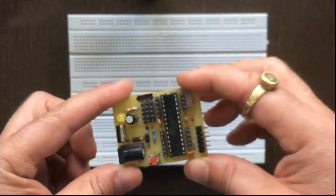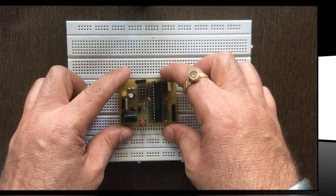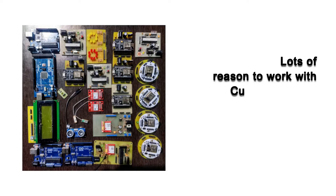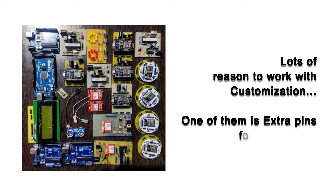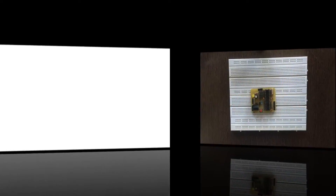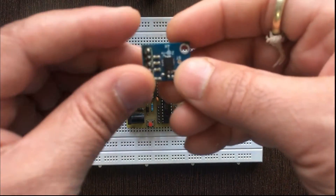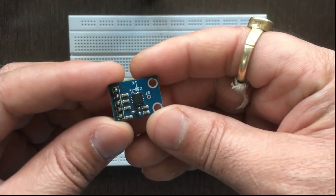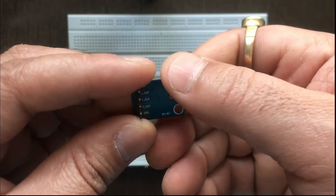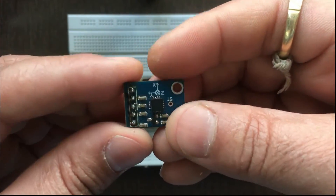I always use a customized board for projects because our customized board has lots of 5V VCC and ground pins so that you can connect a number of sensors to it — Arduino doesn't have such facility. This is the ADXL335 which provides three-axis analog data. It has five pins: VCC, X, Y, Z and ground. This is the GPS Neo which provides serial data and has four pins: VCC, RX, TX and ground.